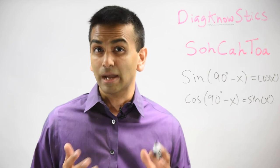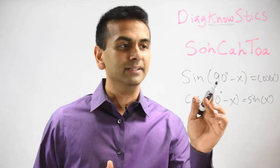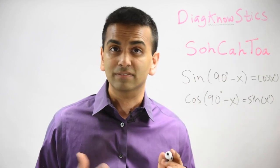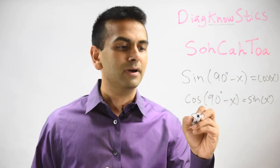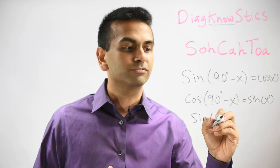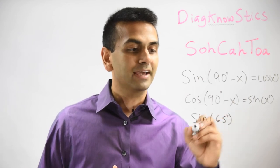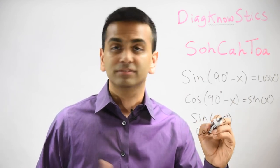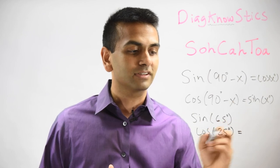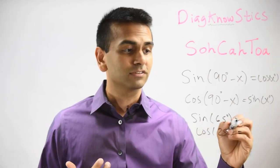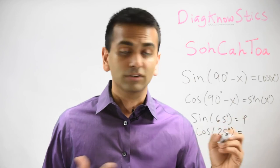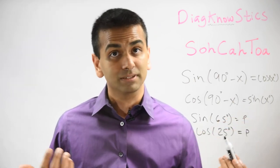Another formula that commonly comes up is that the sine of 90 minus X is equal to the cosine of X. So for example, if you somehow know the sine of 65 degrees and you're being asked for the cosine of 25 degrees — 90 minus 65 — they're gonna equal each other. So if the sine of 65 is equal to P, then the cosine of 25 degrees is also gonna be P.